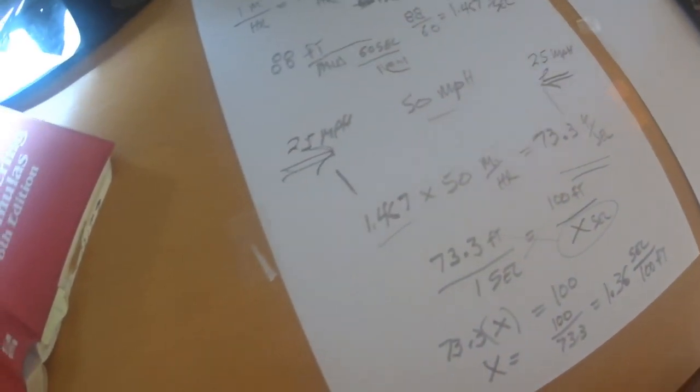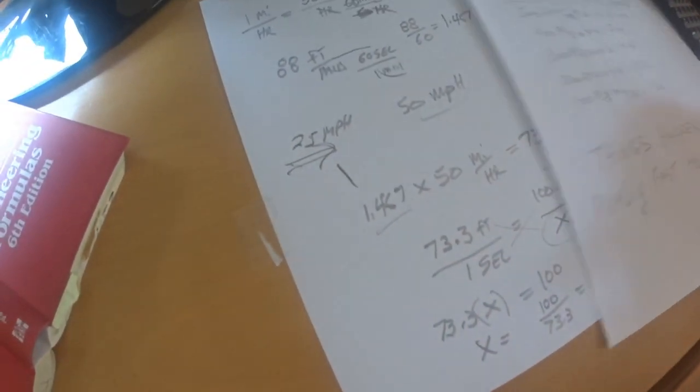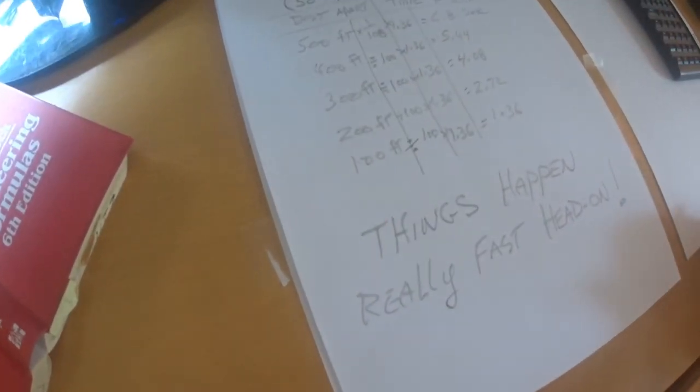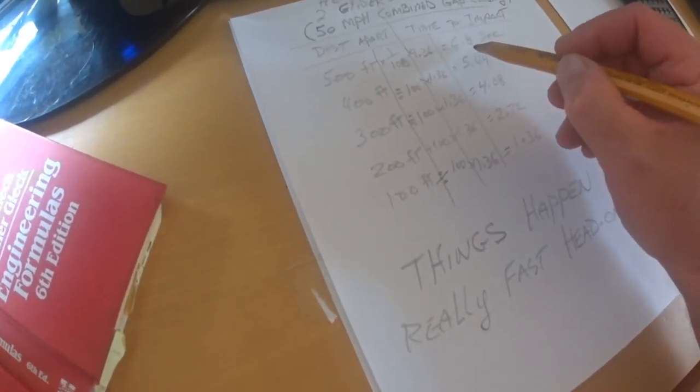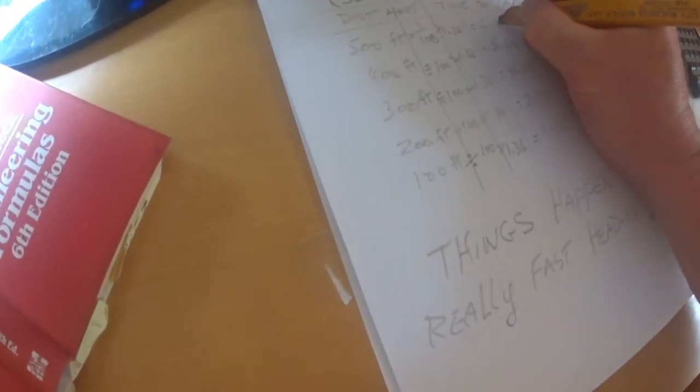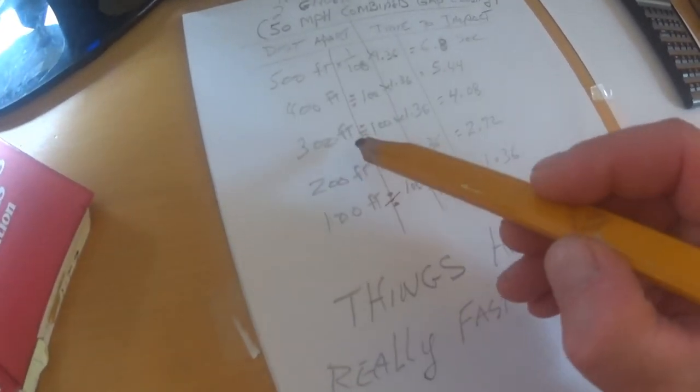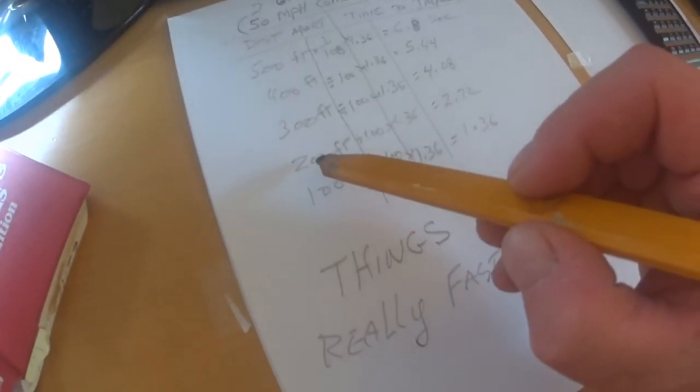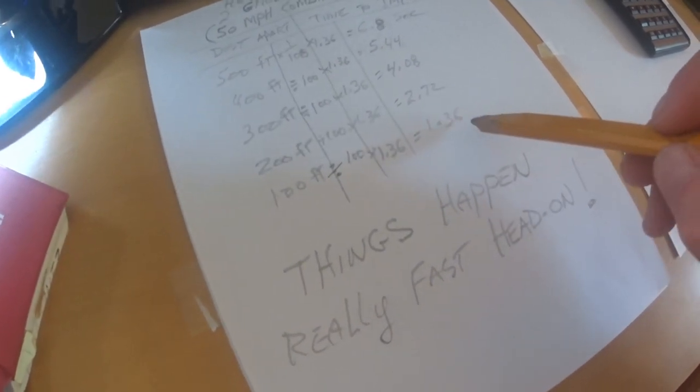Now I've already worked this out once and I have a table here that I came up with. I'll just put it over that. So what I came up with is 500 feet, the distance to close that is 6.8 seconds. If you're 400 feet apart, 5.44 seconds. If you're 300 feet apart, 4.08 seconds. If you're 200 feet apart, 2.72 seconds. If you're 100 feet apart, 1.36 seconds.